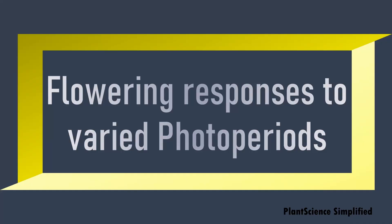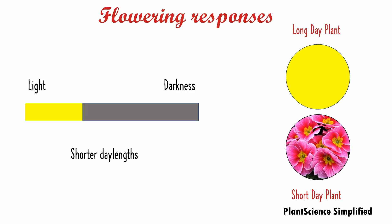Let us understand flowering responses to varied photoperiods. The first condition is where shorter day lengths are present — day lengths less than 12 hours, maybe 9 or 10 hours, with longer darkness. In such conditions, flowering will occur in short day plants, and no flowering can be observed in long day plants.